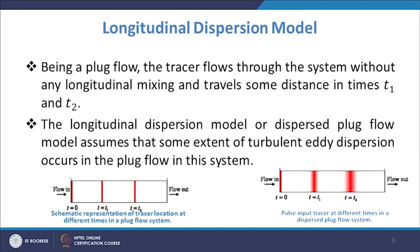At t = 0 the tracer has a certain profile. At t = t₁ there is some dispersion in the longitudinal direction, and at t = t₂ there is further dispersion. The tracer profile spreads because of the longitudinal dispersion occurring in the actual case.